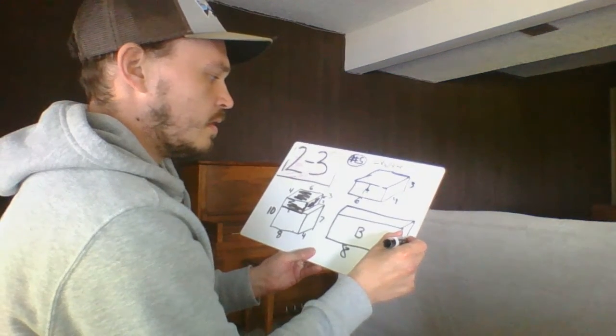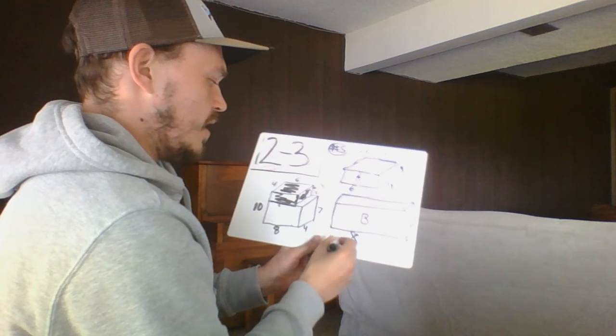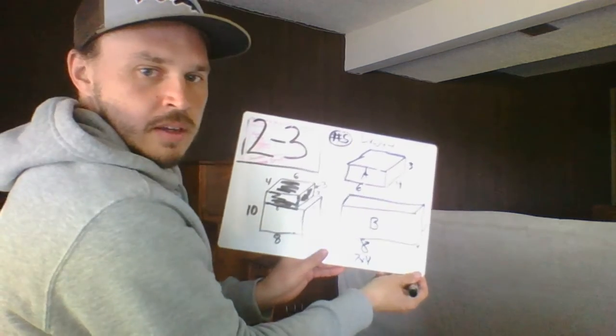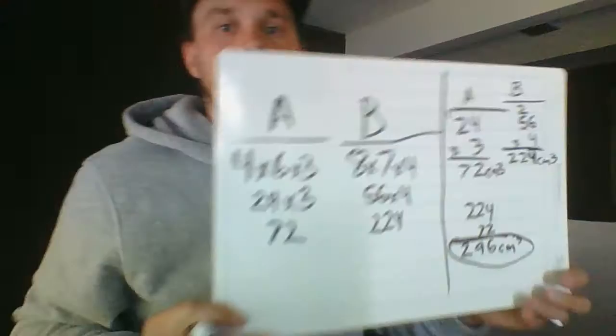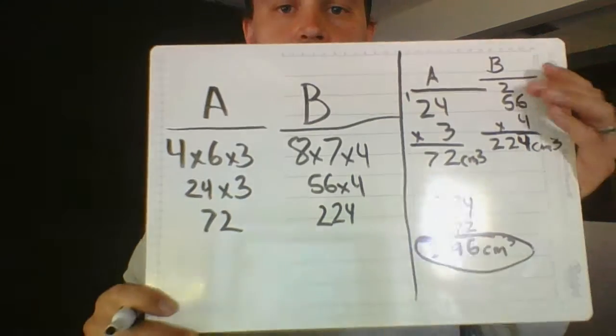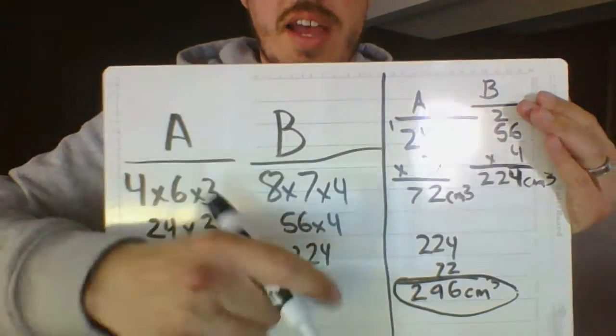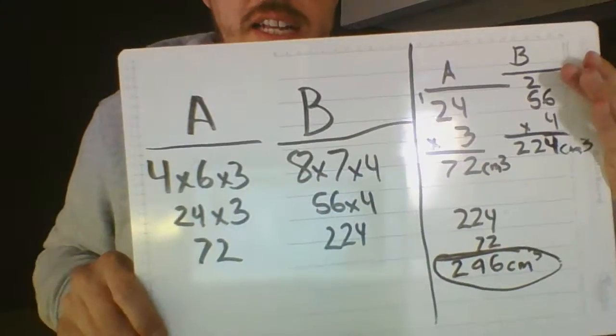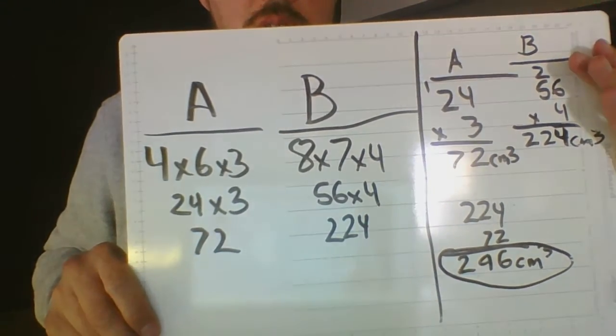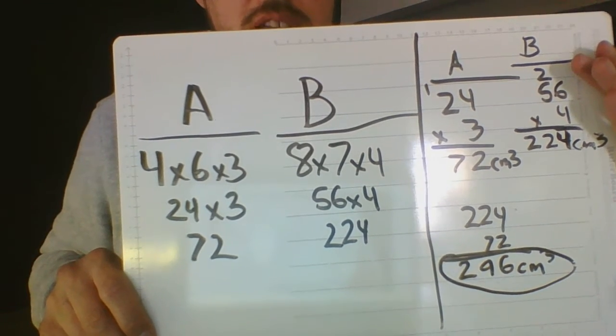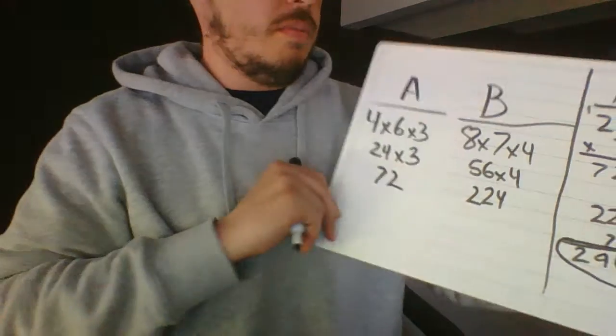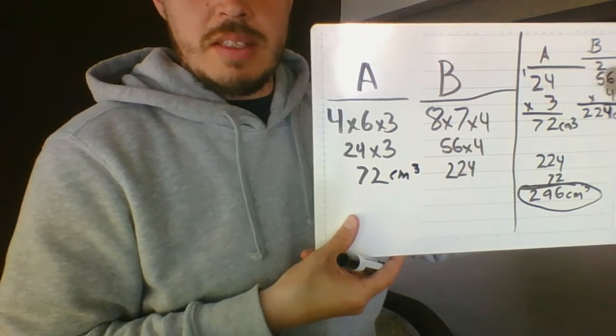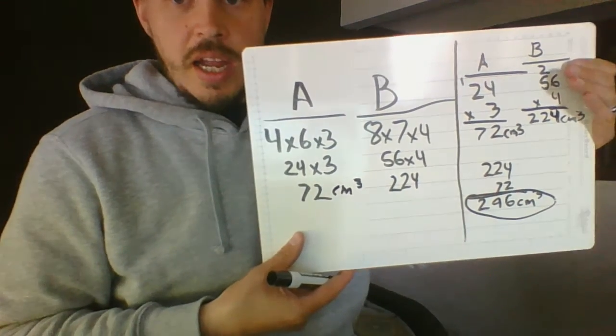Okay, now on the back I did some of the work, did this ahead of time. So I had A. A was my small Christmas present, and I did four times six times three. 24 times three is 72. That's going to be the volume. I have limited space on the whiteboard, that's why I didn't write centimeters and centimeters cubed everywhere.